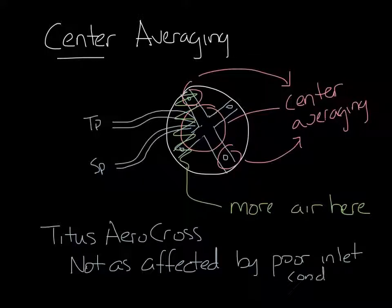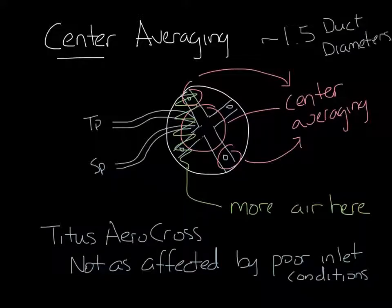Because of this, you need less straight duct into the box inlet, about 1.5 duct diameters for our flow sensor, compared to about 3 duct diameters for a linear averaging type sensor.